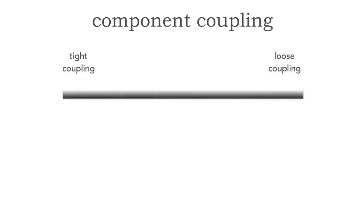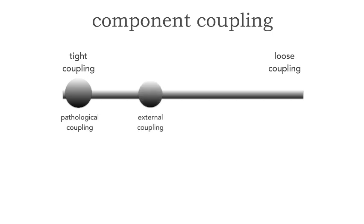Now, whether it's static or temporal coupling as the type, there are four main levels of component coupling. And those move from tight coupling to loose coupling. When we refer to applications that are tight coupling to loose coupling, let me show you four of these. The first is something called pathological coupling, the next is external coupling, then control coupling, and finally data coupling. Notice the size of the circles here — that refers to the level of coupling, not the type, but the level of coupling.